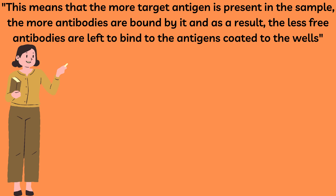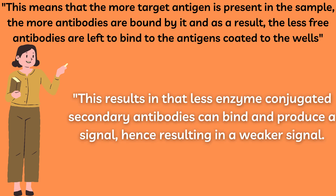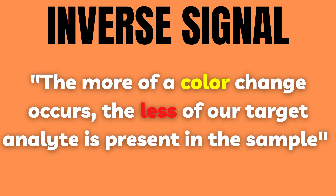This means that the more target antigen is present in the sample, the more antibodies are bound by it. As a result, the less free antibodies are left to bind to the antigens coated to the wells. This results in less enzyme-conjugated secondary antibodies being able to bind and produce a signal, hence resulting in a weaker signal. In other words, the more of a color change occurs, the less target analyte is present in the sample.